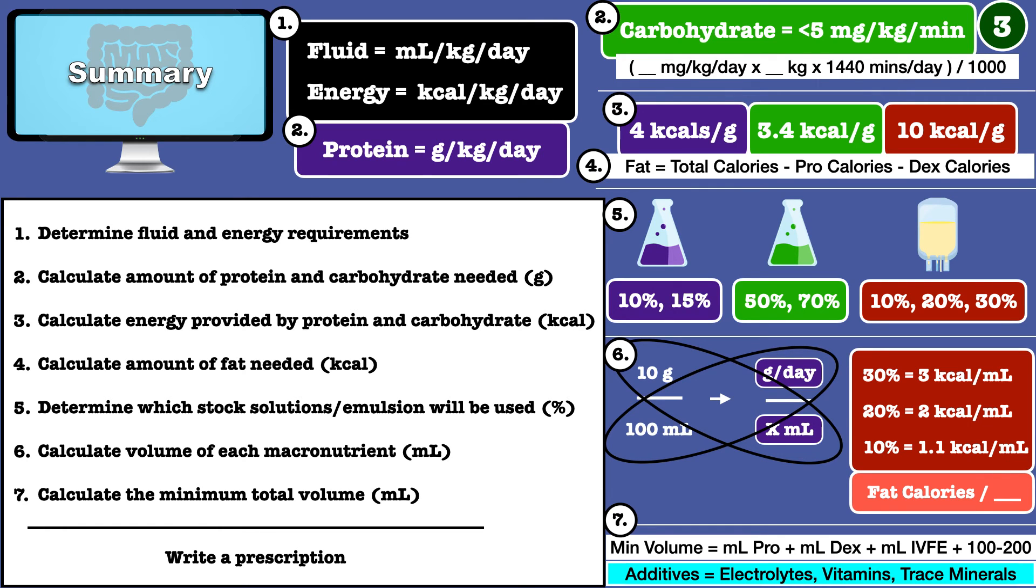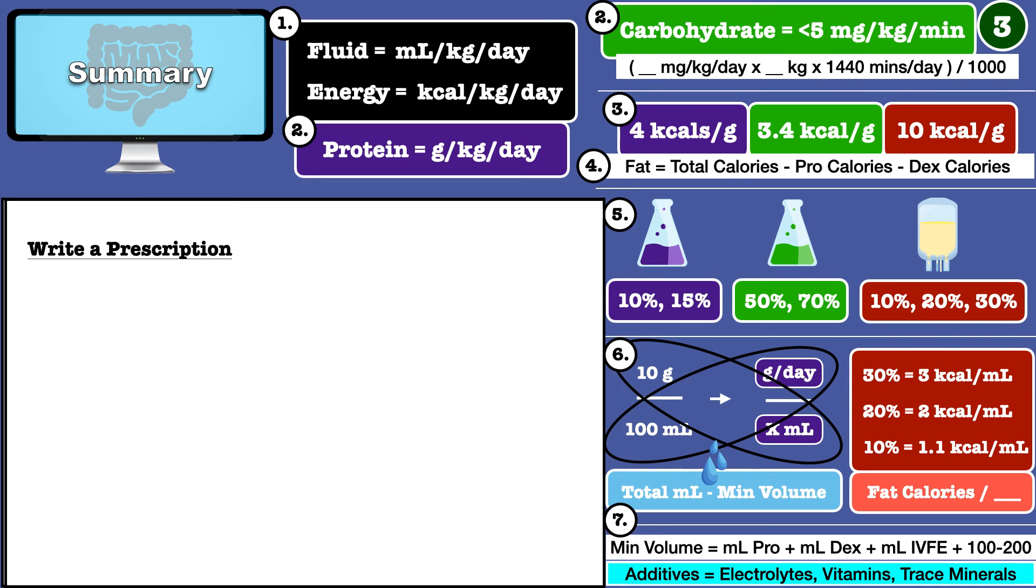You can calculate how much sterile water should be added by taking the total desired volume and subtracting the minimum total volume. Finally, you are ready to write a prescription.